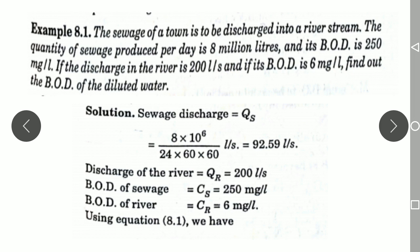Whenever the effluent has been discharged into the river, we need to find the concentration of the diluted water — that is, the BOD of the diluted mixture. The first thing you need to do is convert the sewage discharge from million liters per day to liters per second. You multiply by 10 to the power of 6 and divide by 24 × 60 × 60.